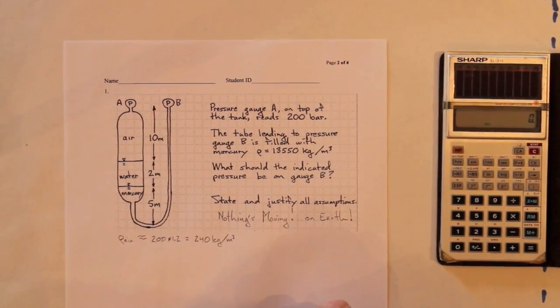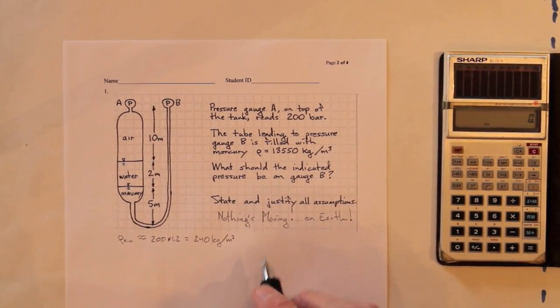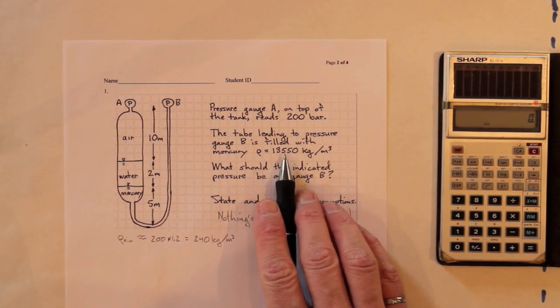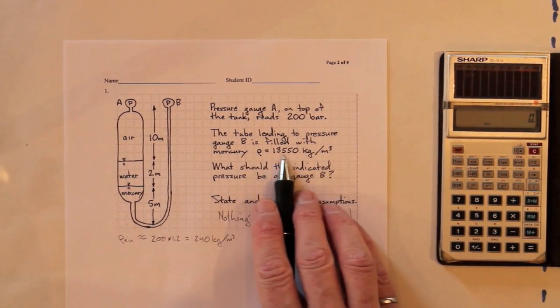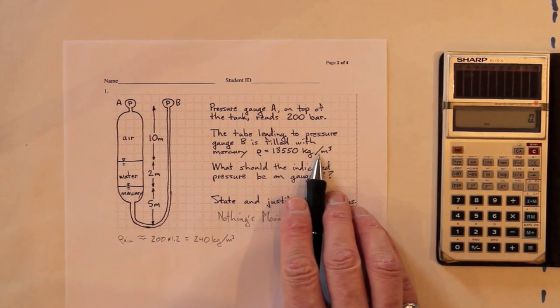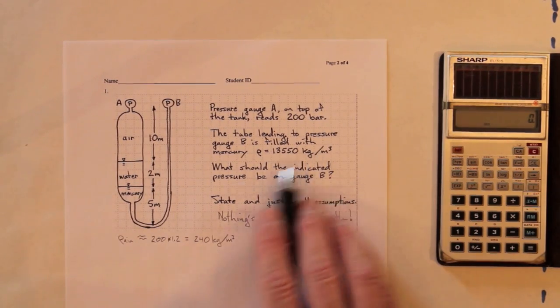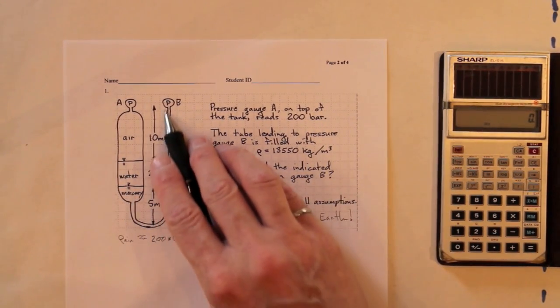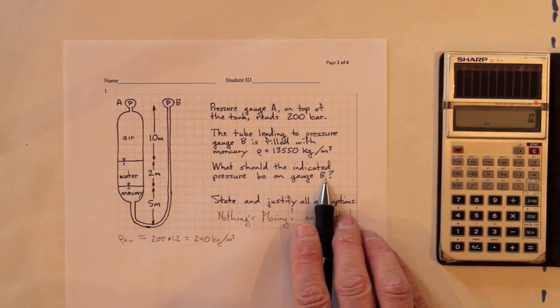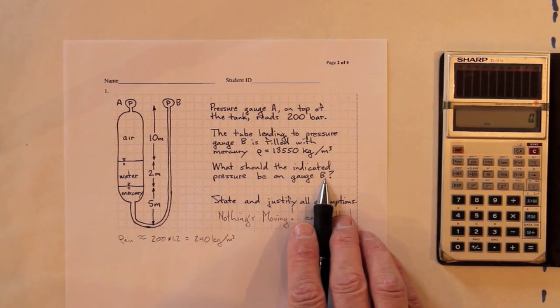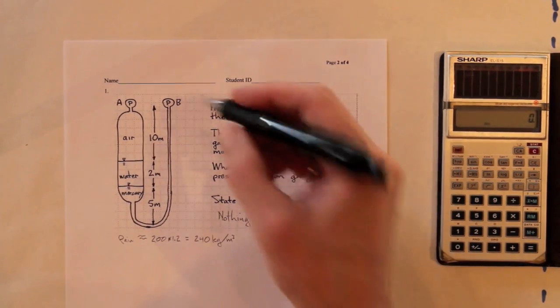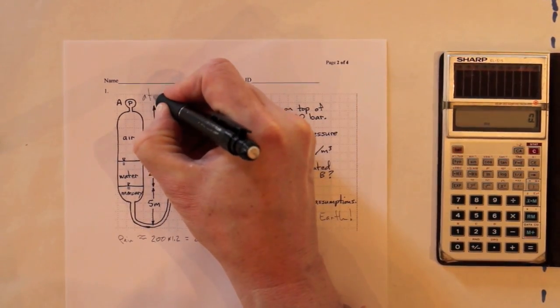That's sort of a bit of a trick. Now, the tube leading to pressure gauge B is filled with mercury at a density of 13,550 kilograms per cubic meter. So, that's going all the way around and up to there. Okay, what should the indicated pressure be on gauge B?